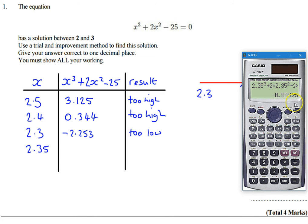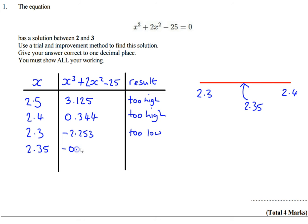And we can see that that's going to give us -0.977 etc. And we can see that that is going to be too low. So what we're saying is that 2.35 is too low which means my solution must be higher than 2.35.